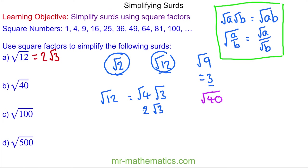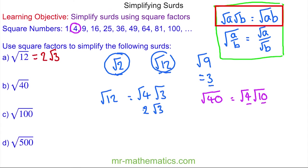For the square root of 40, the number 40 has 4 as a square factor. So we have the square root of 4 multiplied by the square root of 10, because 4 times 10 is 40. This uses the multiplication rule for surds. The square root of 4 is 2, so the square root of 40 simplifies to 2 root 10. Notice that root 10 has no square factors.